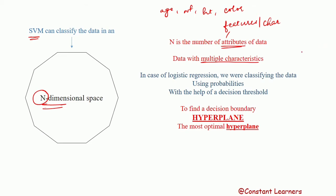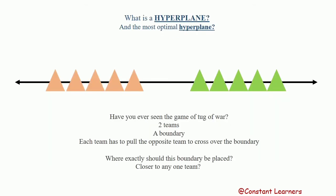In case of logistic regression, we were classifying data using probabilities. On the y-axis we had probabilities and we had two classes, 0 and 1. We used 0.5 as the decision threshold — probability values below 0.5 were class 0 and above 0.5 were class 1. Now in support vector machine also, we are trying to find the decision threshold, or we can say a decision boundary, that is known as the hyperplane. So in SVM we are trying to find out the most optimal hyperplane.